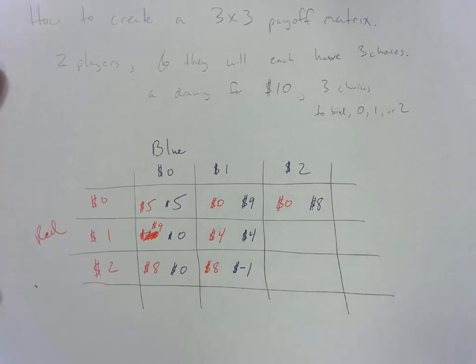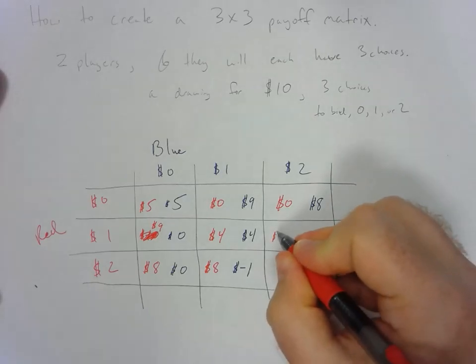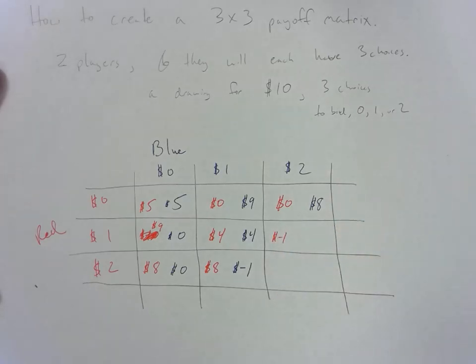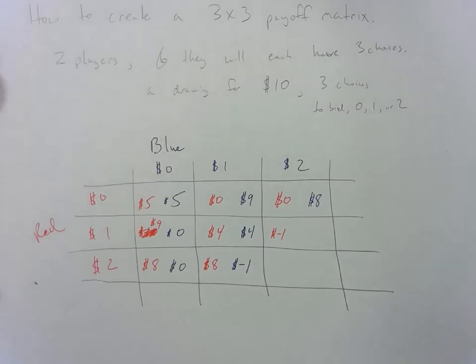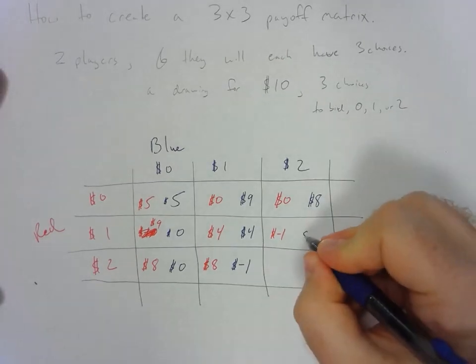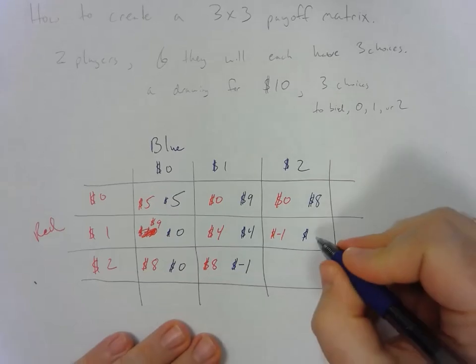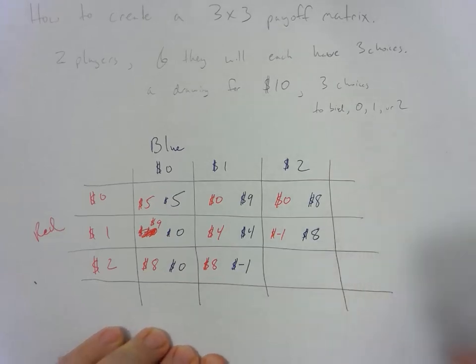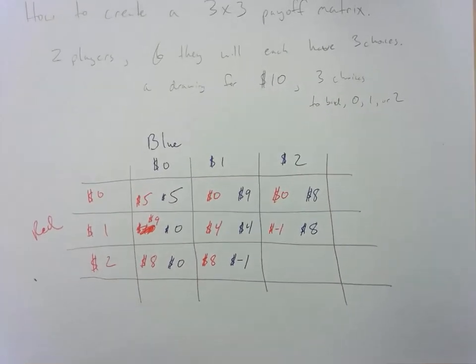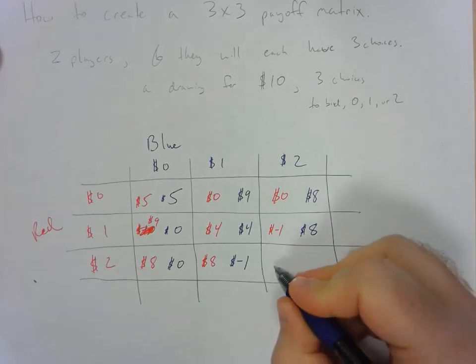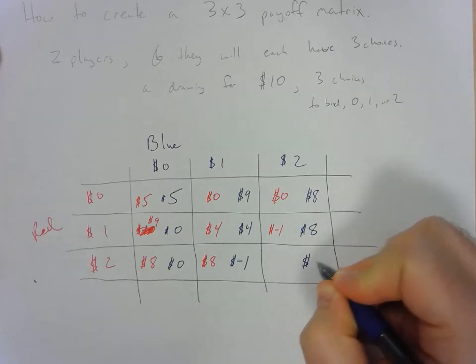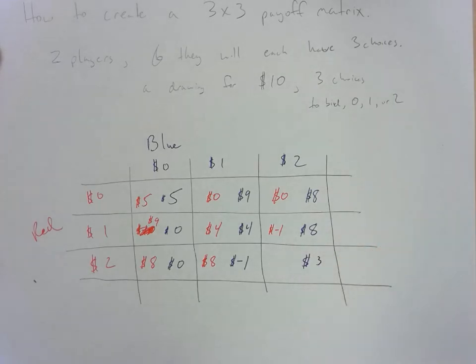Same thing will happen over here and what we will end up with is an 8. And then finally if they both end up bidding 2 they will split the $5 and then we'll subtract 2.